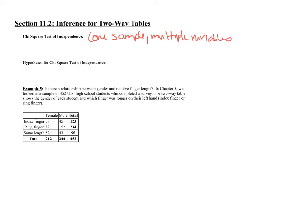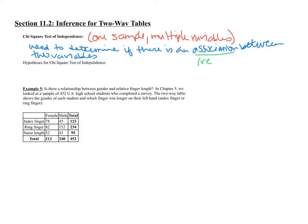The test of independence is used when we have only one sample but multiple variables, and we're trying to determine if there is an association between two variables. Association is another word for a relationship between two variables.